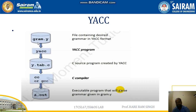For example, suppose we have created a YACC program with extension dot y — say gram.y. We can compile this with YACC. It will generate a C file called y.tab.c, and this y.tab.c file will be compiled by the cc or gcc compiler. Then it will generate the syntax analyzer a.out, an executable program that will parse the grammar given in gram.y. Now a syntax analyzer has been generated, and whatever input you give, based on that, it will create a syntax tree.